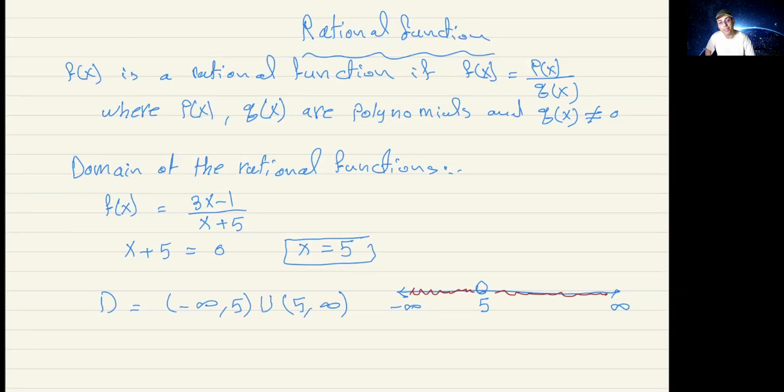So first, set the denominator to zero and then solve for x. So I got x is negative 5, and this is my restricted value. And then draw the number line, and negative 5 would be the restricted value, open circle, and then get the two intervals here. If you have more than one restricted value, we're going to have more than one or two intervals. So let's get another example.